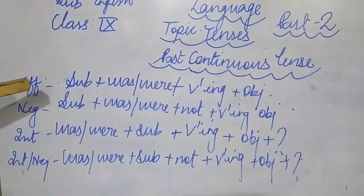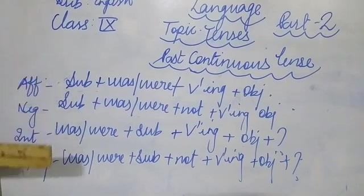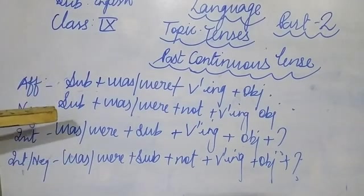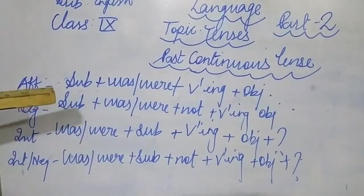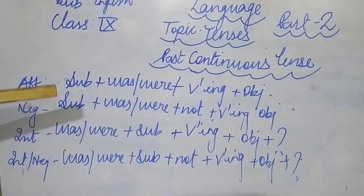In the affirmative sentence, you can make like this, she was driving her car. In the negative sentence, she was not singing a song. Interrogative sentence, were you eating a mango? In the interrogative come negative, why was the blind boy not crying?